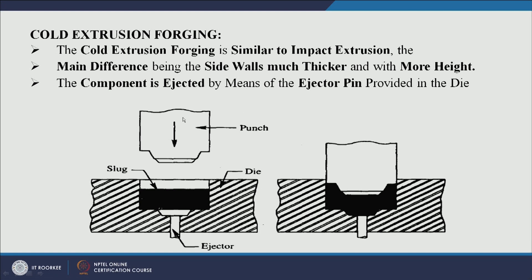Here the slug is placed in the die and the punch impacts with the slug, following the cavity. Whatever little bit of metal flow has to take place flows back and takes the required shape. Once it fills the cavities completely, the ejector hits the job from the back side for removal from the die.